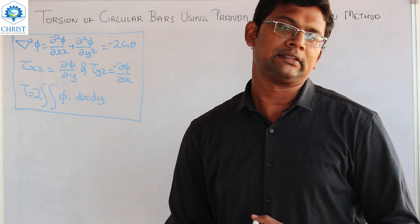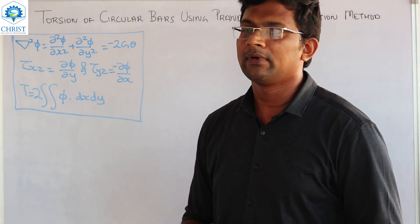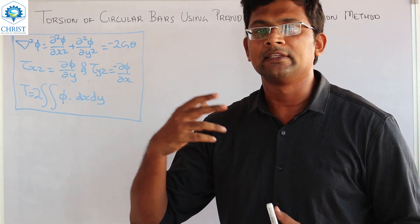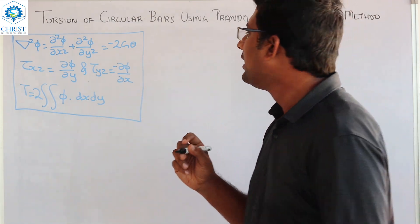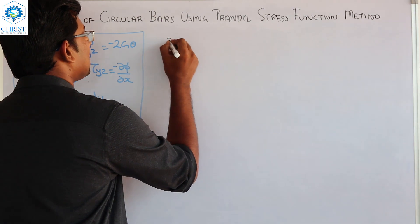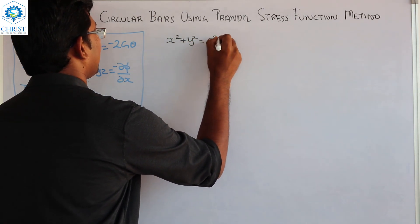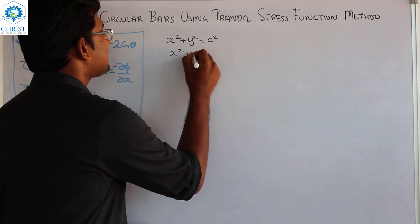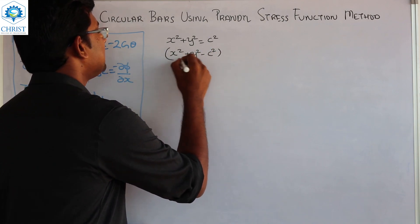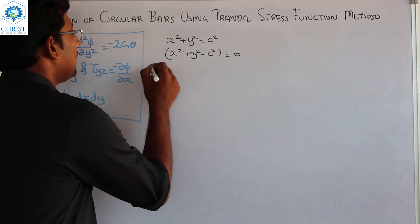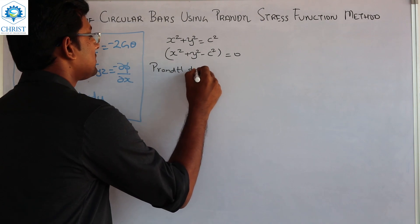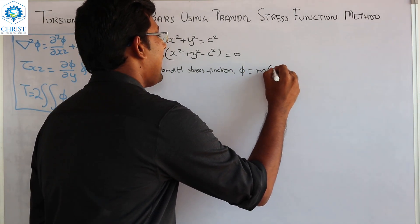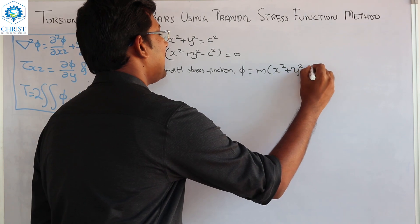In the ellipse it is called axy. In the first session we have the values of the circle and elliptical cross section. We know the expression for the circle. The general expression for the circle is x² + y² = c². The equation is x² + y² − c² = 0. So, the Prandtl stress function is equal to m times (x² + y² − c²).